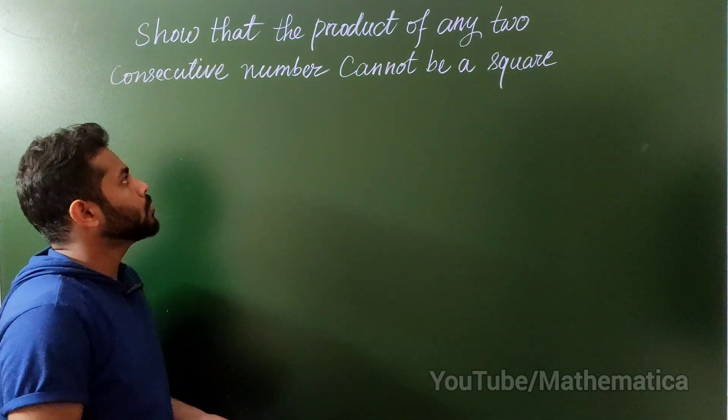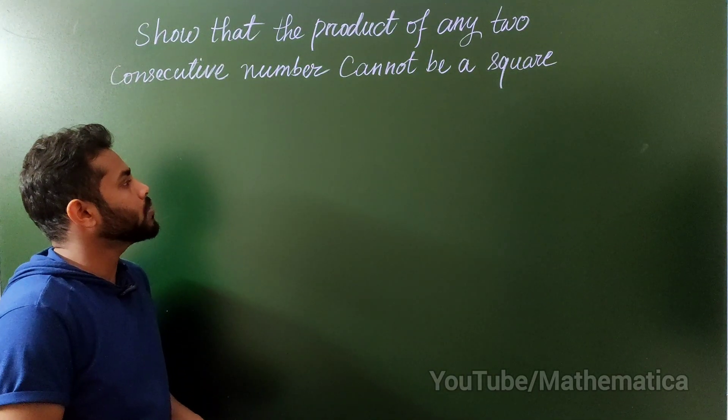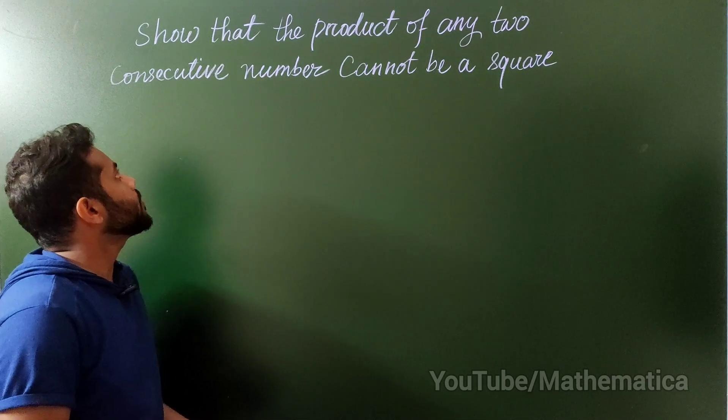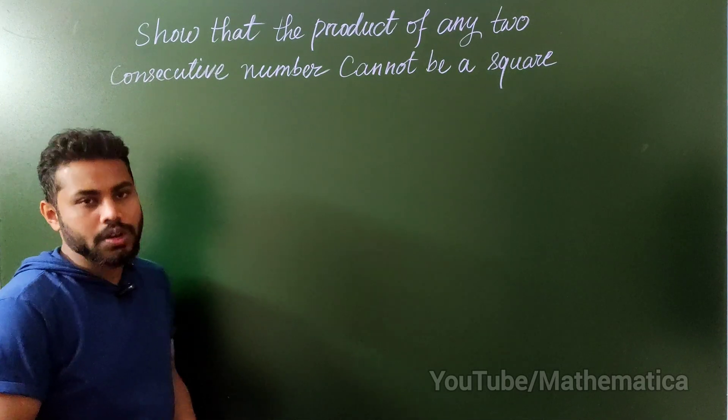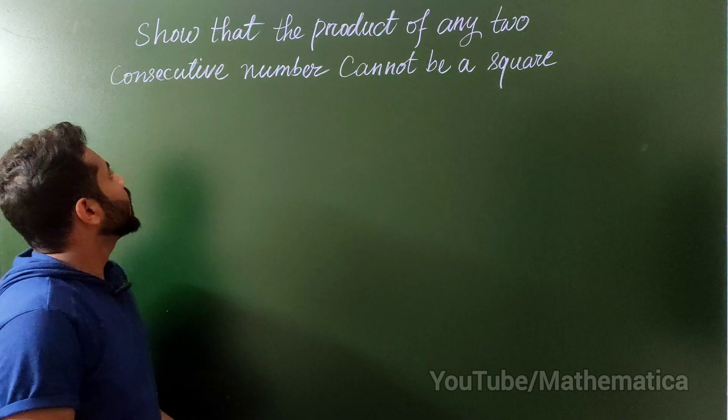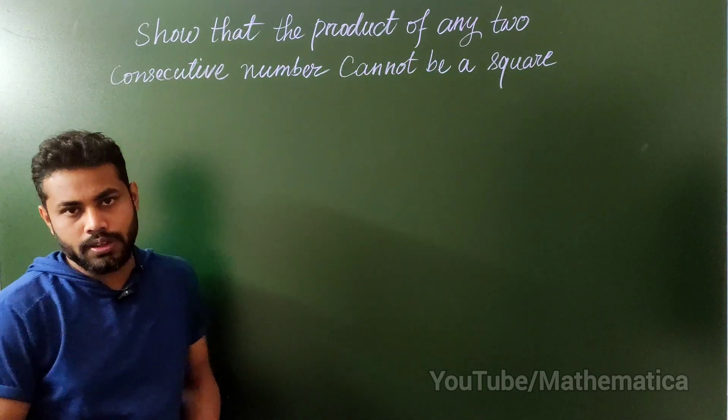Hello everyone. So today we will solve this question which says that the product of any two consecutive numbers cannot be a square.